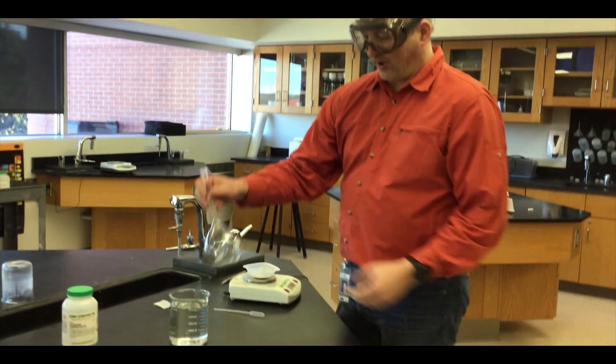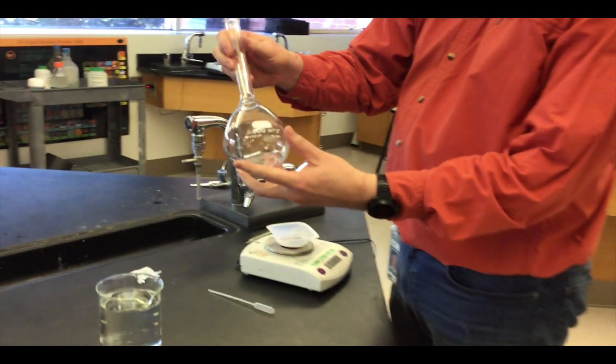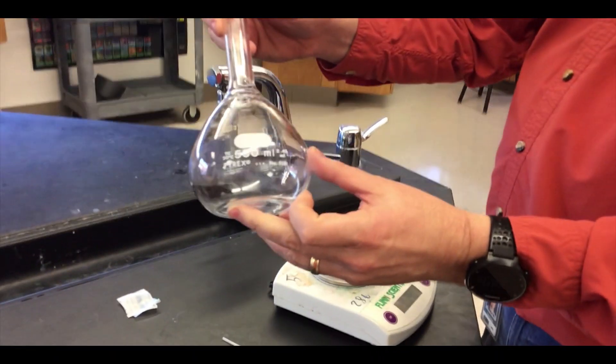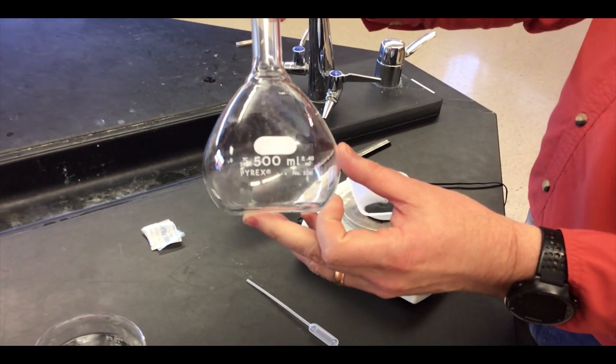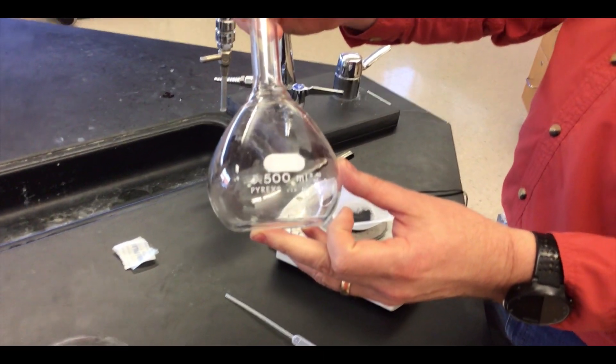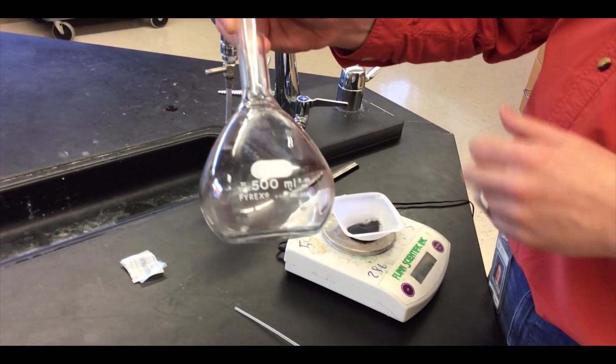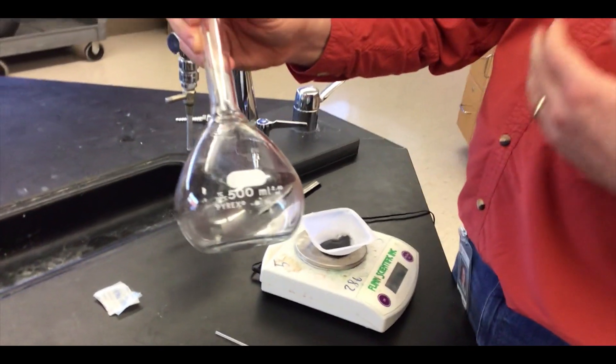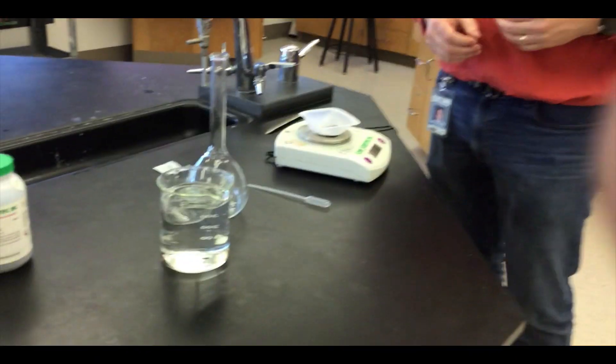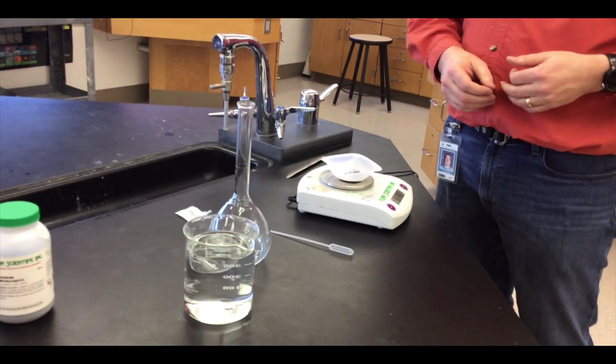I have here a 500 milliliter volumetric flask. For each sample of substance that we would make we would have a different size, so they come in liters, 100 milliliters, 50 milliliters, 500 milliliters. We're going to make a half liter or 500 milliliters of a potassium permanganate solution.